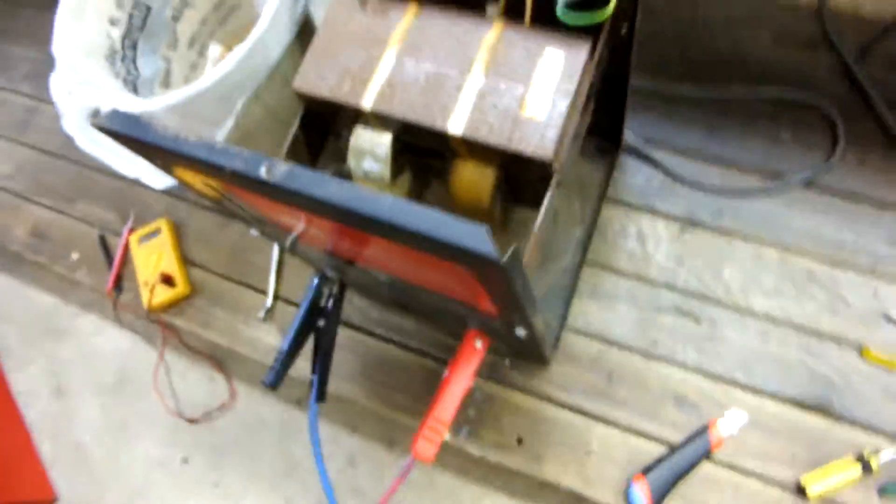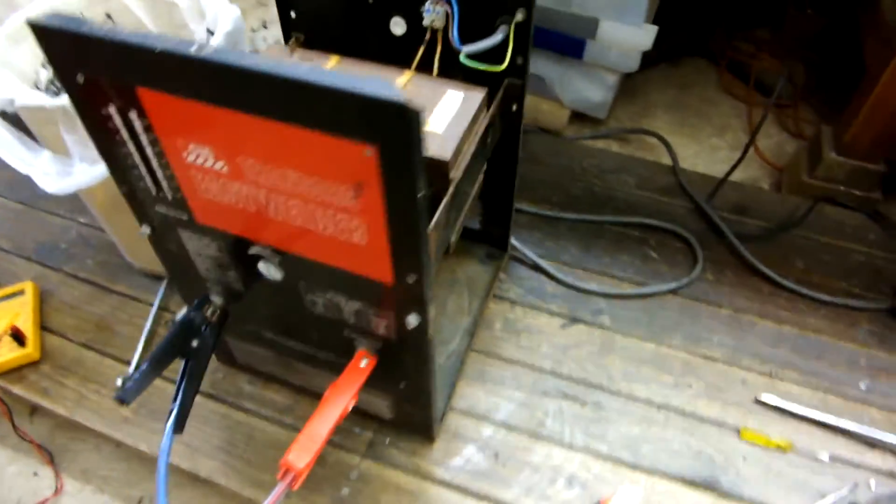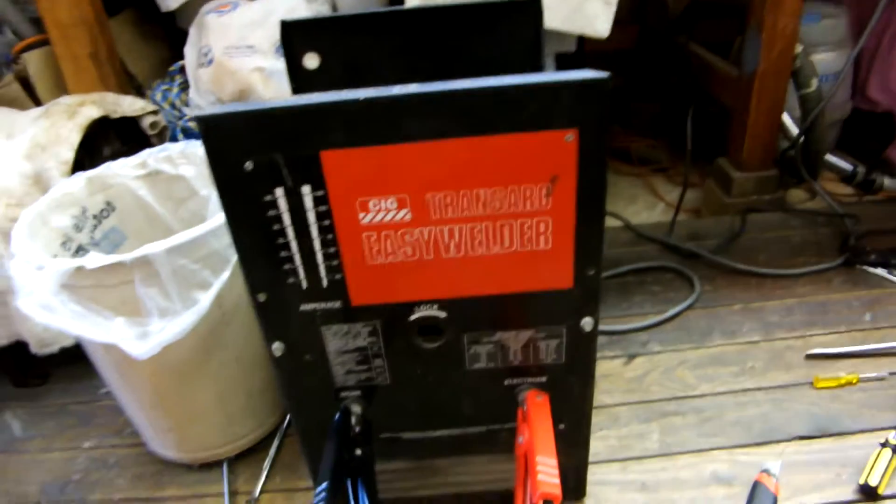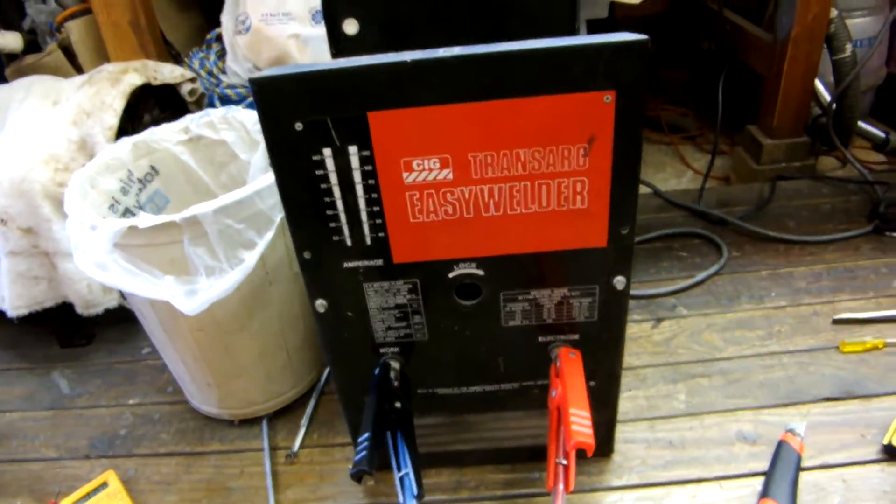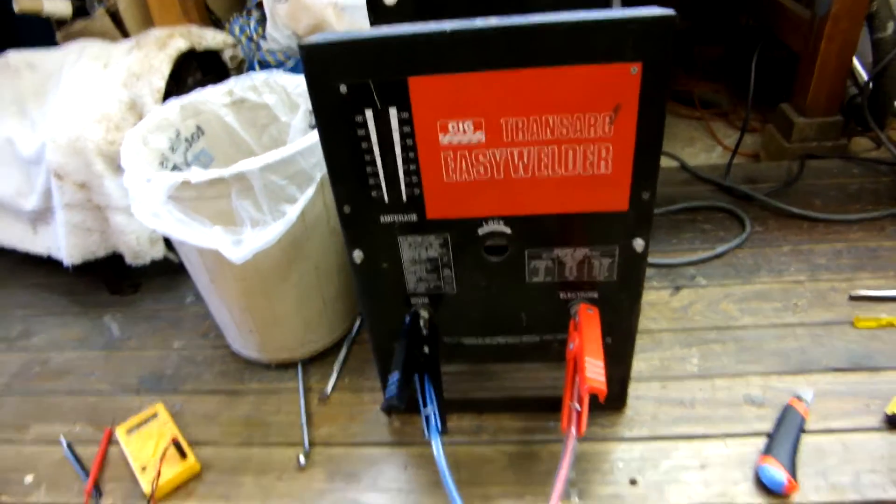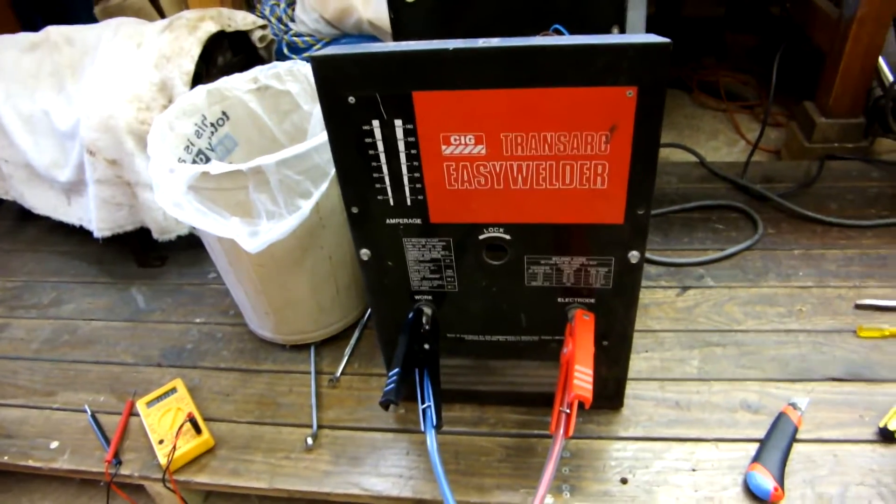This is just a Trans Arc Easy Welder. You pick these up for about 30 or 40 dollars here in Australia. And it's an easy way to get more amps out of your welder if you're struggling with them.